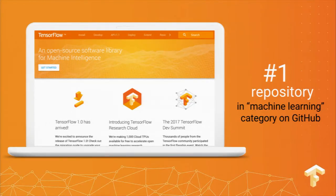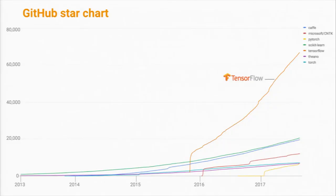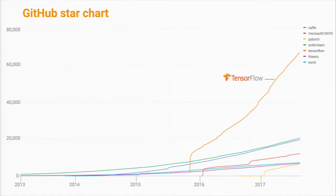TensorFlow is now the number one repository in machine learning on GitHub. The best metric we have is GitHub stars, and if you chart over time the people starring the repository on GitHub, that orange curve going up and to the right is TensorFlow. We've been really delighted to see this level of adoption, especially in comparison to other open source machine learning frameworks, some of which have been around much longer.